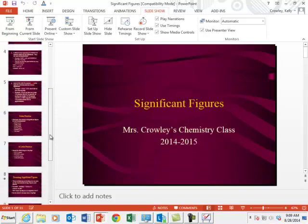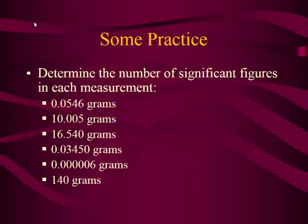Let's review the practice problems. Zeros in the front don't count — how many? Three. Next: 10.005. The one in front is good, the five in the back is good, and this is the bookend rule — how many? Five. Next: 16.540. You know the one, six, five, and four are good. Is that zero at the end good? Yes, because it's after a decimal — that's five sig figs. Next example: zeros in the front don't count, but the zero at the end after the decimal is good. And the last one: zeros in the front don't count — that's only one. Does the zero at the back count? No, it's not after a decimal, so this one only has two.